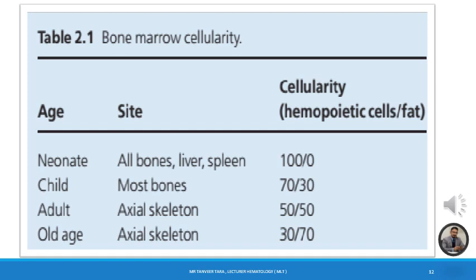A general estimate of expected normal cellularity range in adults can be determined by subtracting the age of the patient from 100%. The range is then plus or minus 10% of that number. So a normal healthy 70-year-old should have an overall cellularity between 20 to 40 percent.